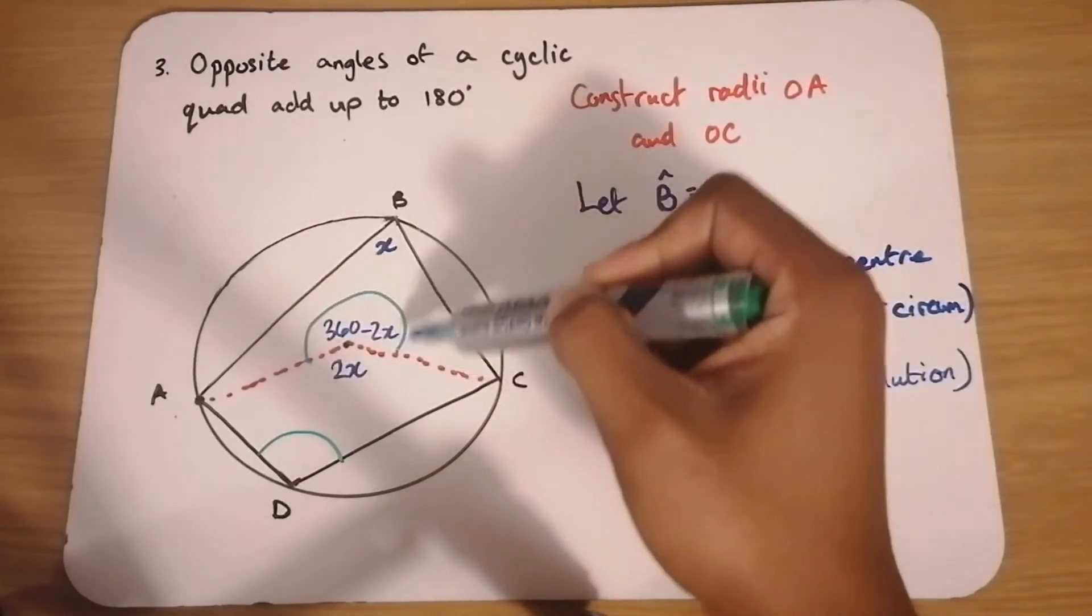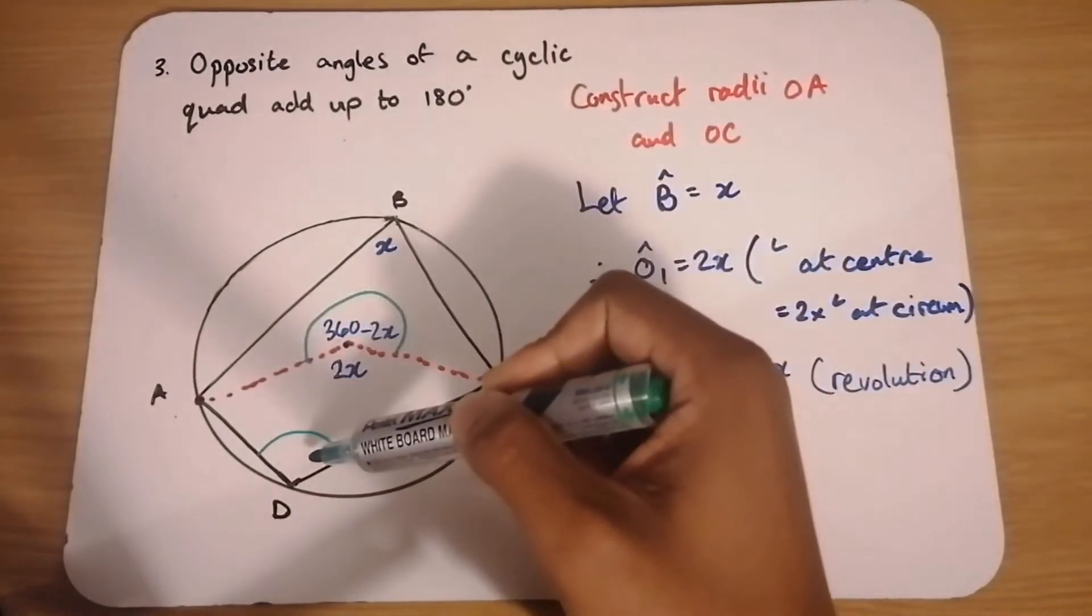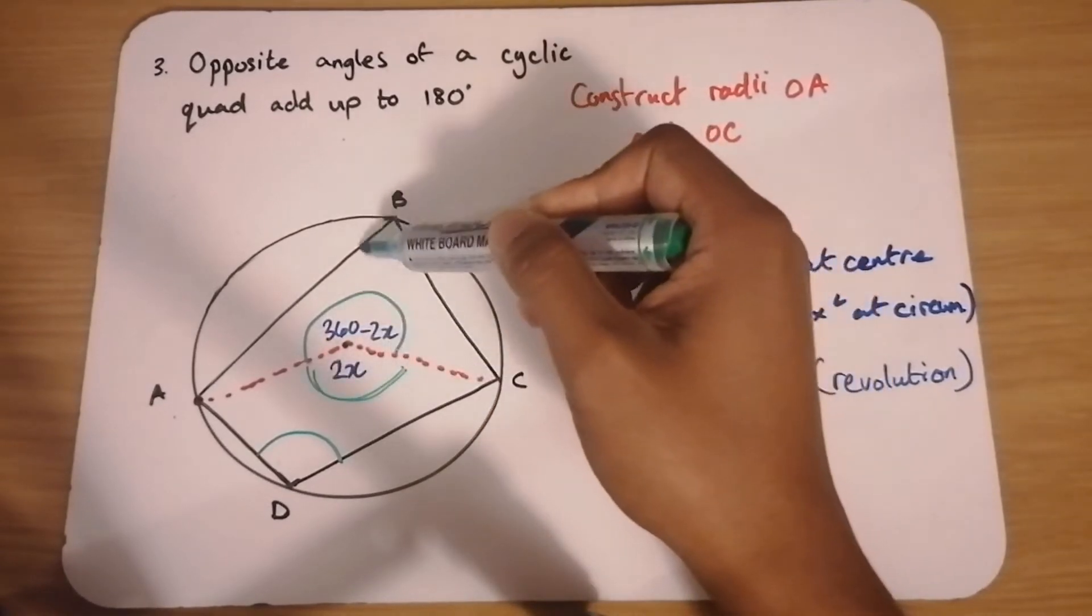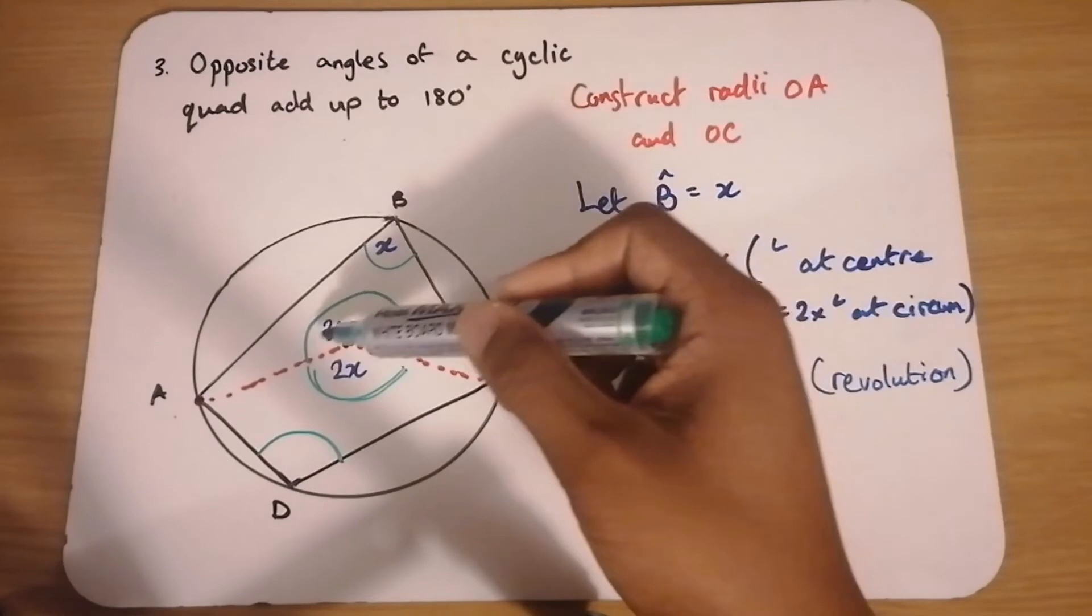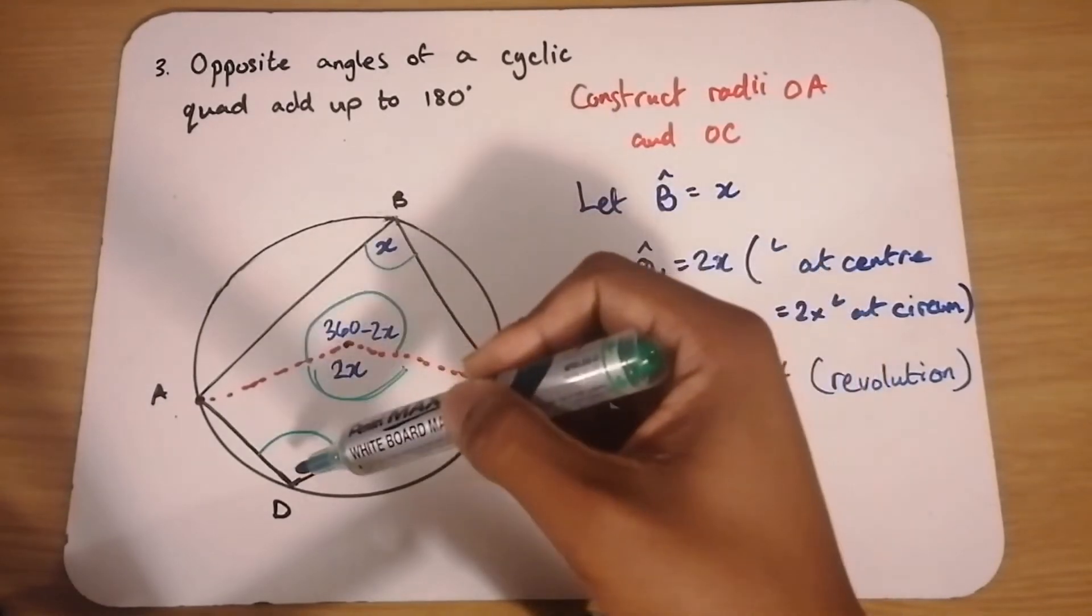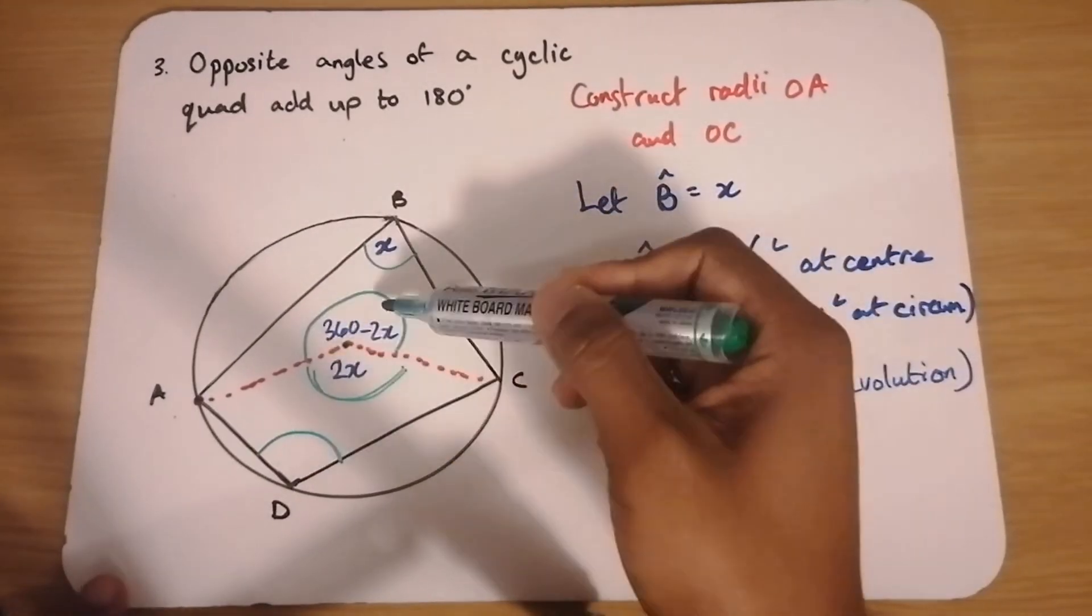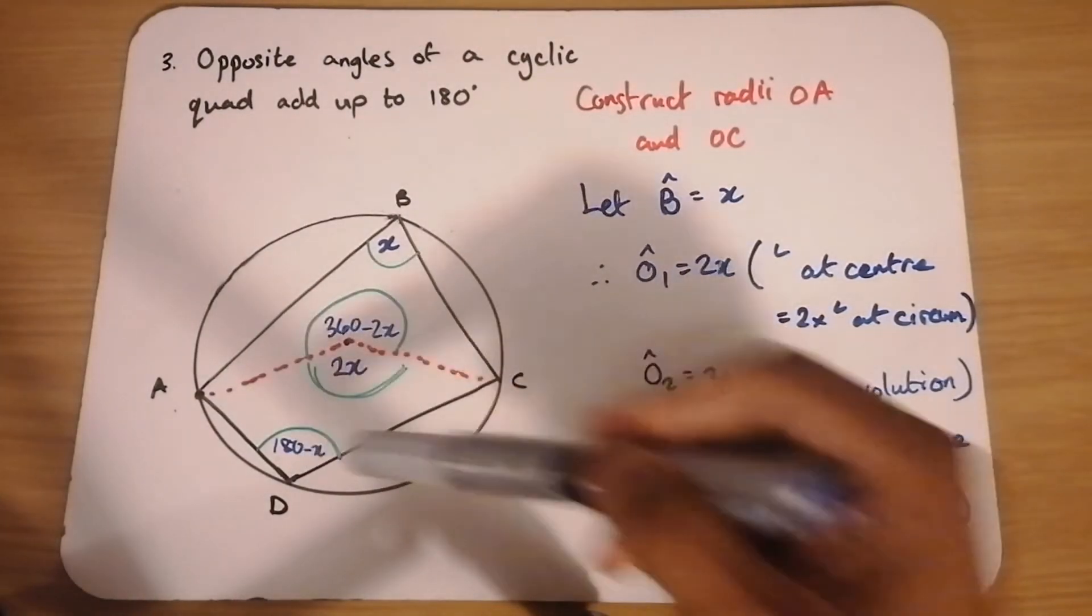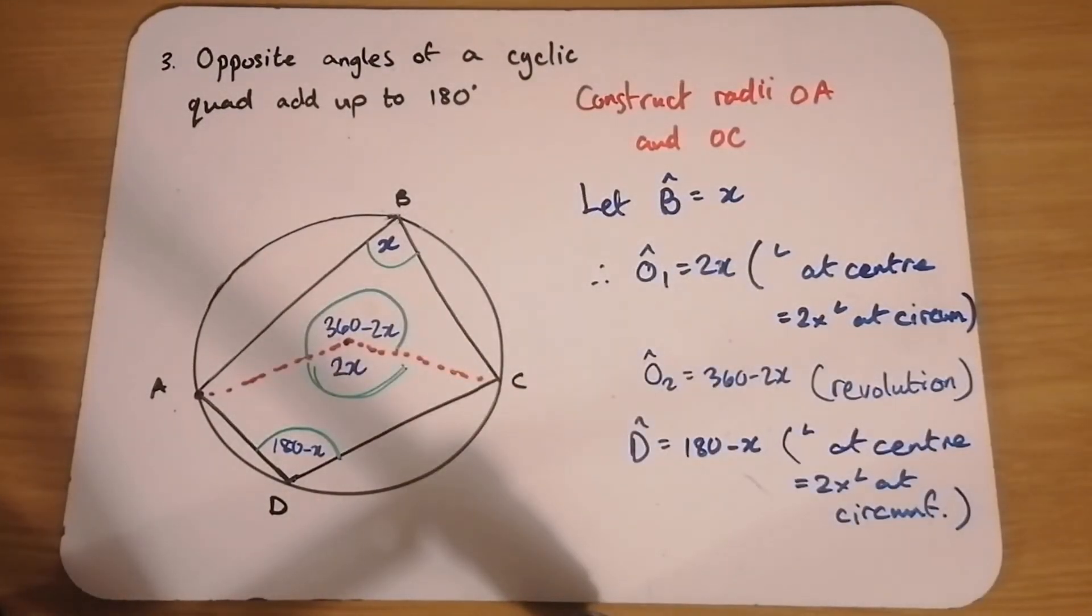Because we're using this reflex angle here. So then we have to look at this one. If I was looking at angle 2X, then I'd have to go to angle B. But since I'm looking at the reflex one, I'm going to angle D. So this should be half of what that is. And half of O2 is 180 minus X.